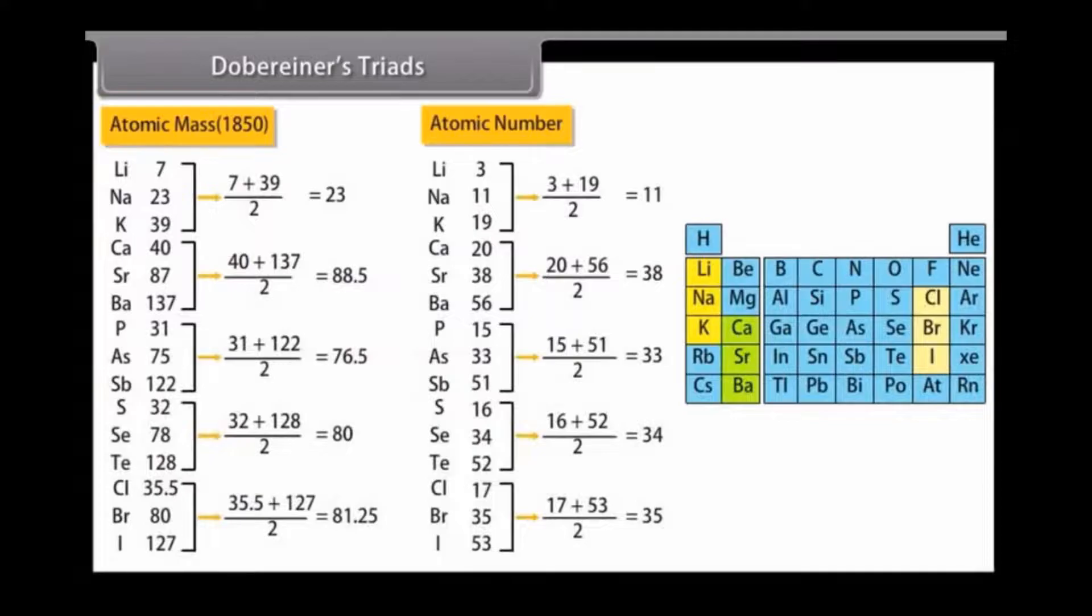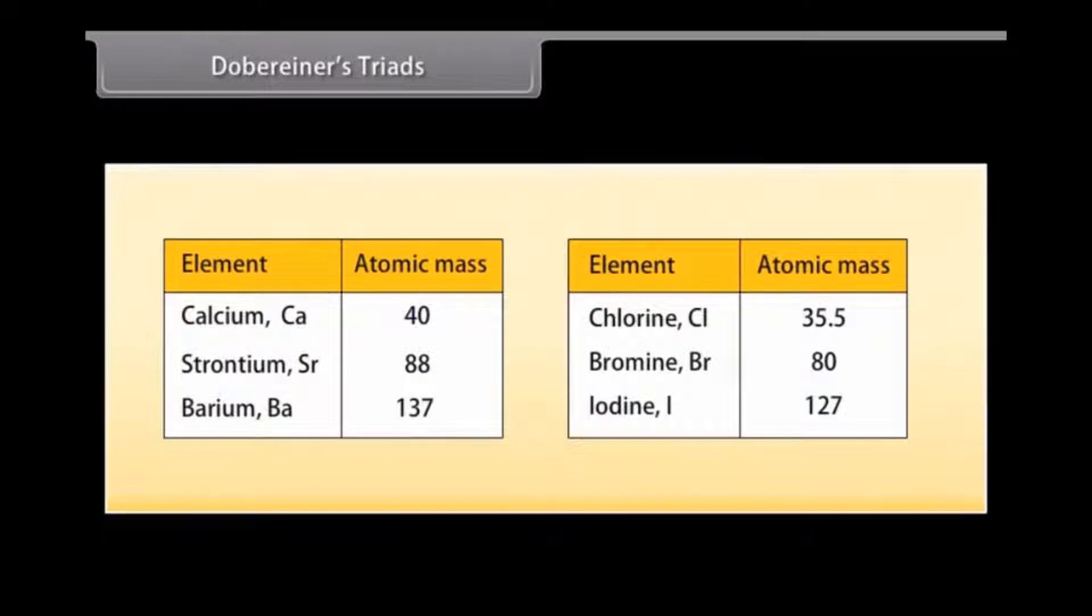He observed that atomic mass of the middle element of a triad was equal to the arithmetic mean of atomic masses of other two elements. For example, in a triad of calcium CA-40, strontium SR-88, and barium BA-137, the mean of the atomic masses of the first and third elements is equal to the atomic mass of the second element. That is, 40 plus 137 whole upon 2, which is 88.